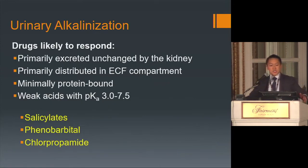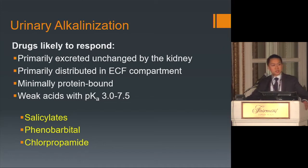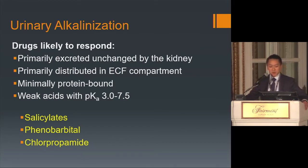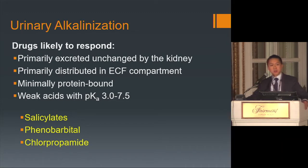Drugs that respond well to urinary alkalinization are typically excreted primarily unchanged by the kidney, distributed in extracellular fluid compartments, minimally protein-bound, and are weak acids with a pKa between 3 and 7.5. The most common drugs for which urinary alkalinization is used are salicylates, phenobarbital — the only barbiturate for which this works, since most others are eliminated by the liver — and chlorpropamide.